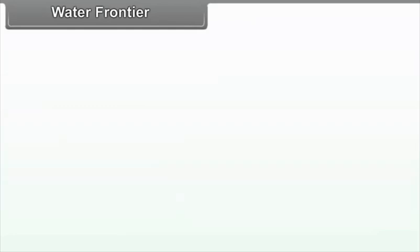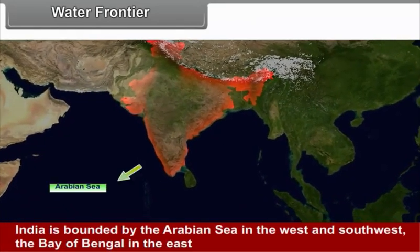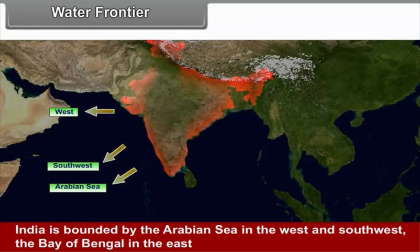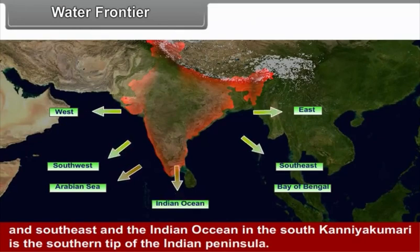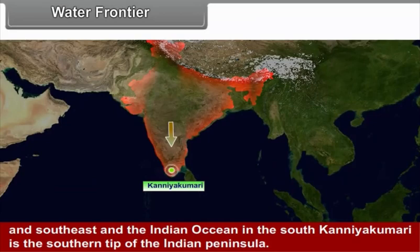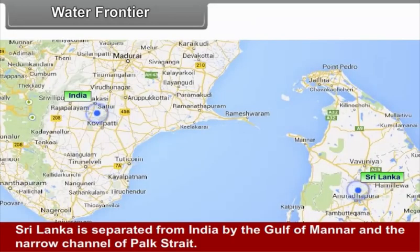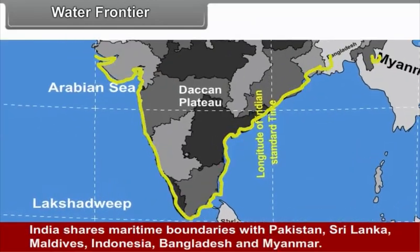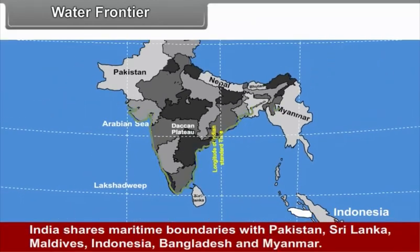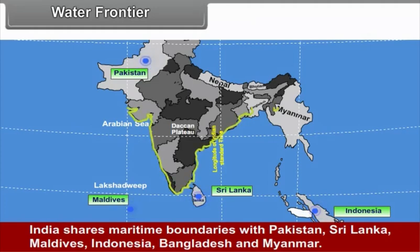India is bounded by the Arabian Sea in the west and south-west, the Bay of Bengal in the east and south-east, and the Indian Ocean in the south. Kanyakumari is the southern tip of the Indian Peninsula. Sri Lanka is separated from India by the Gulf of Mannar and the narrow channel of Palk Strait. India shares maritime boundaries with Pakistan, Sri Lanka, Maldives, Indonesia, Bangladesh, and Myanmar.